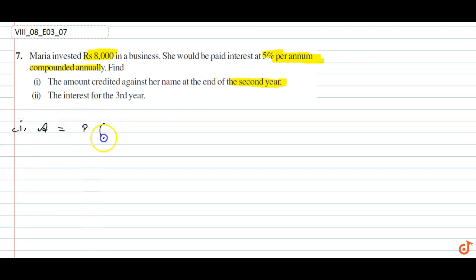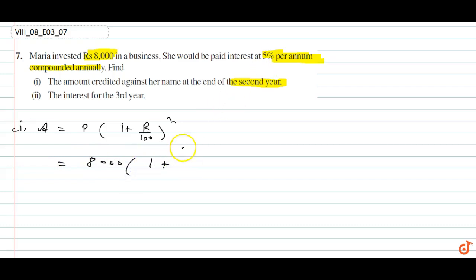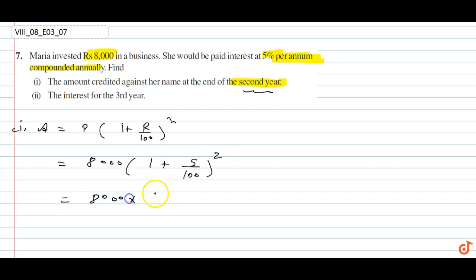The formula for amount is: Principal × (1 + Rate/100)^n. Principal is Rs. 8000, rate is 5%, and n is 2 for the end of the 2nd year. So it becomes 8000 × (105/100) × (105/100).